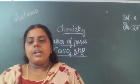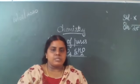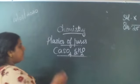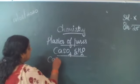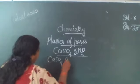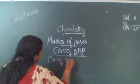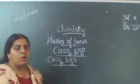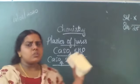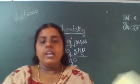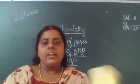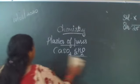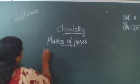Plaster of Paris is obtained by the heating of gypsum. Gypsum's formula is CaSO4·2H2O — that is the chemical formula of gypsum. Plaster of Paris is obtained by heating gypsum at 373 Kelvin.